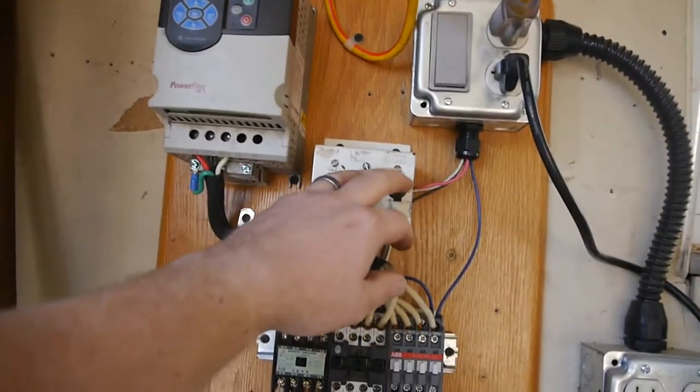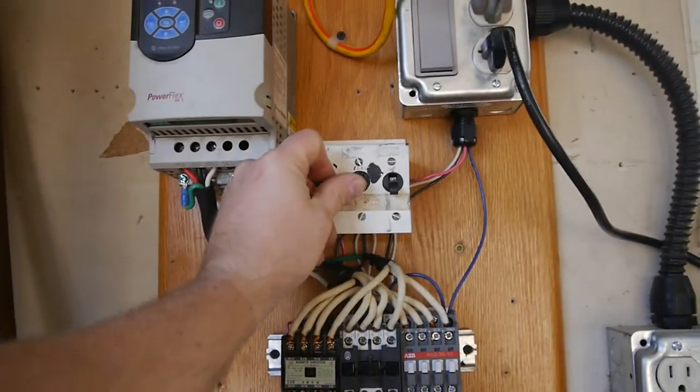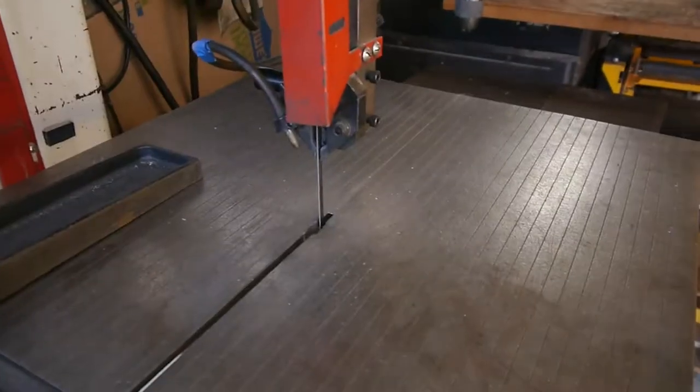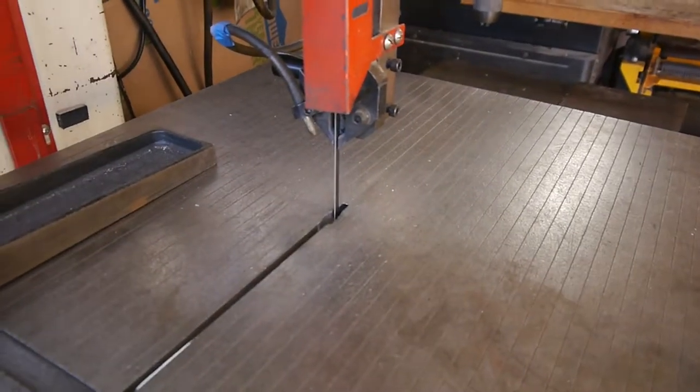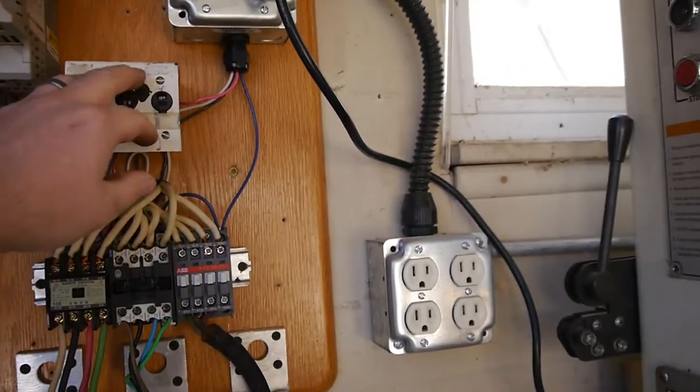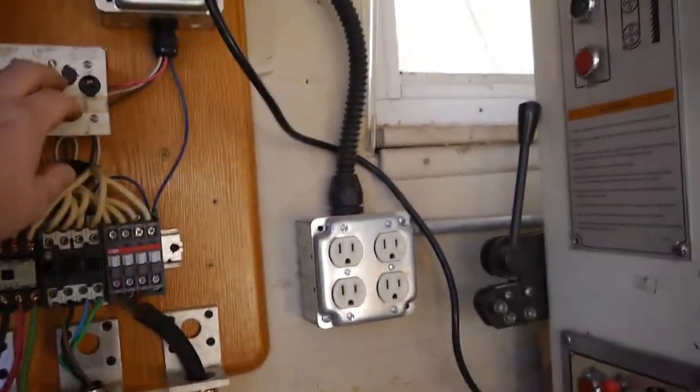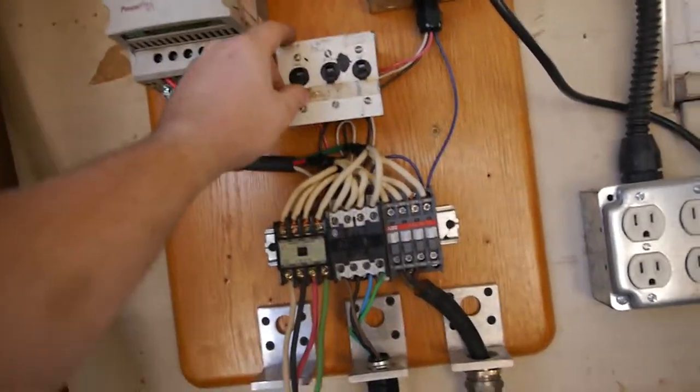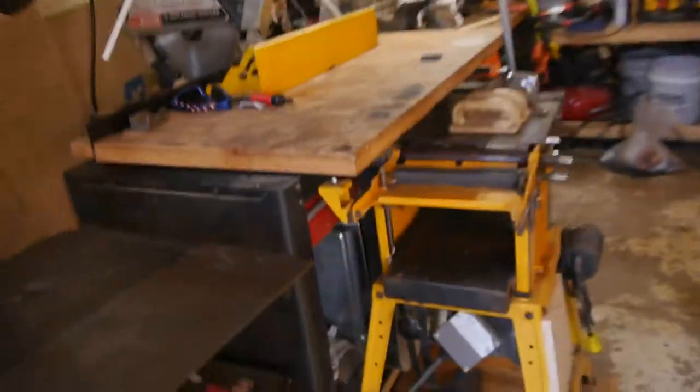And then if we want to run the bandsaw, we just click on the bandsaw one. Hit start. All right, so that turns off the bandsaw. And then we also have it running this jointer here. This is a jointer planer combo.